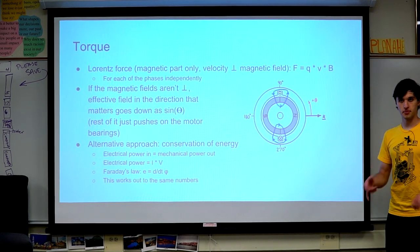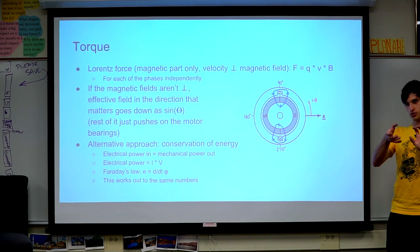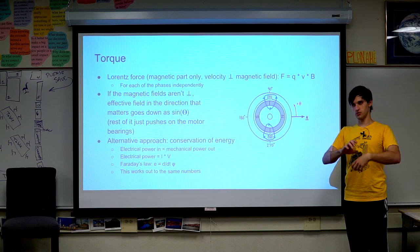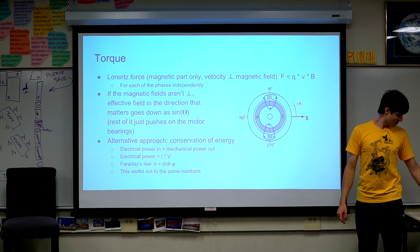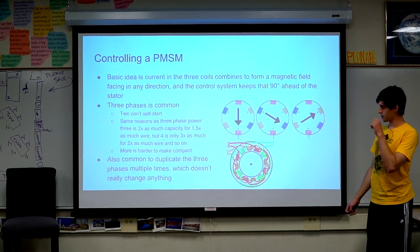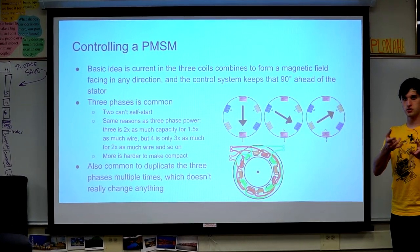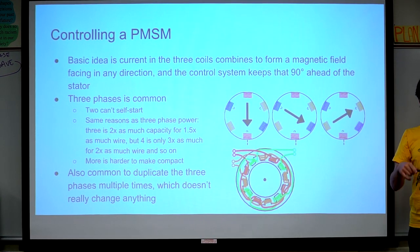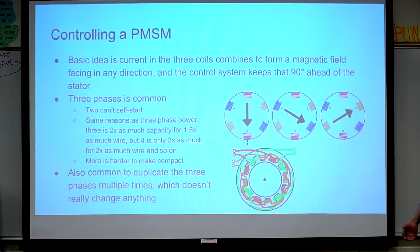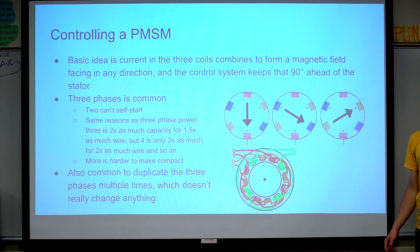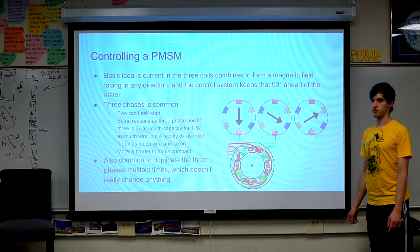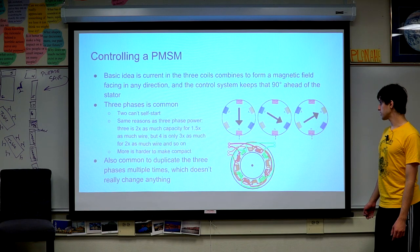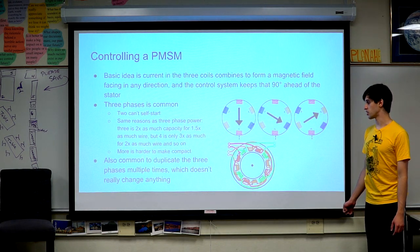Looking at this from energy conservation: to first approximation, electrical power in equals mechanical power out (ignoring heat). Electrical power is current times voltage, and by Faraday's law the back EMF equals the derivative of flux linkage — as the motor spins, the magnetic flux through each coil changes, and that change produces the voltage. Now let's talk about three-phase motors. A brush motor in its simplest form has one coil that spins; a three-phase motor has at least three phases. The basic idea is you have three coils and the magnetic fields from current flowing through them combine to produce a single magnetic field pointing in any direction you want.